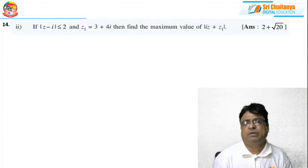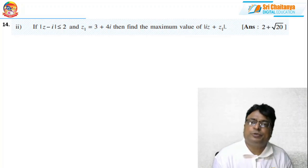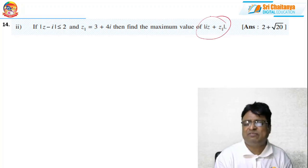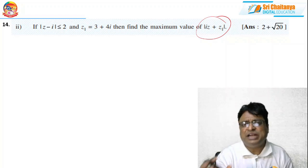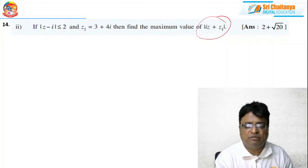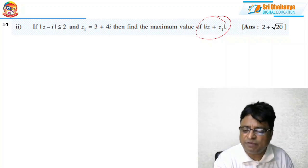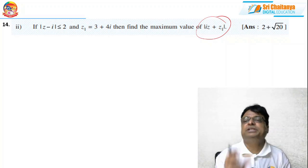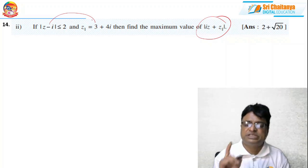Coming to the 14th second problem: if |z - i| ≤ 2 and z₁ = 3 + 4i is given, what is the maximum value? I am applying the property |z₁ + z₂| ≤ |z₁| + |z₂|. I need to convert the expression because we are given |z - i| and need to work with |iz + z₁|. The key is manipulation using these two given pieces of information.